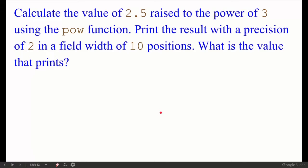Calculate the value of 2.5 raised to the power of 3 using the pow function. Print the result with a precision of 2 in a field width of 10 positions. What is the value that prints? We have to write the pow function. The math library function is called pow. The power of 3, 2.5 raised to the power of 3. It will print 10 positions with 2 digits precision.